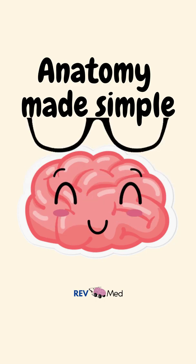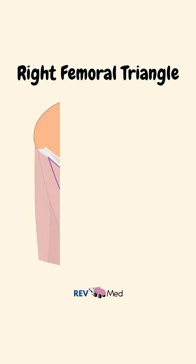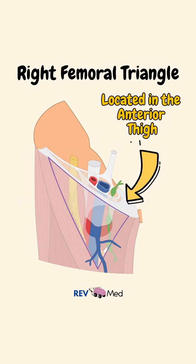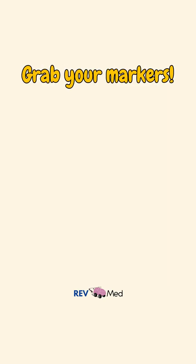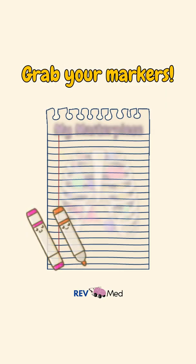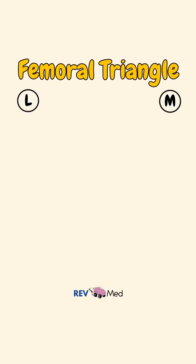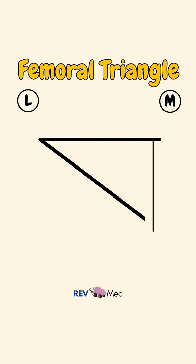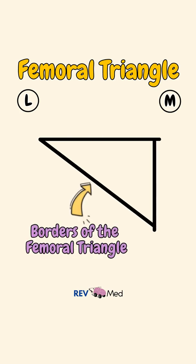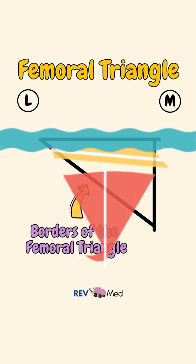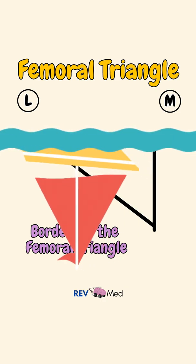Here's the most simple explanation you'll hear today. Let's draw out the right femoral triangle, located and seen from the anterior thigh. Go grab some paper and colored markers. We'll first label our lateral side and our medial side. Before we label, let's draw our foundation. Draw a triangular structure representing the borders of the femoral triangle — it sort of looks like an upside-down sailboat.